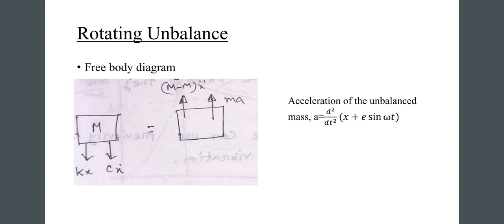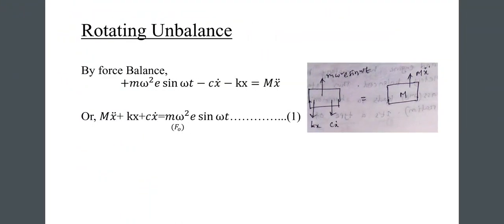From the free body diagram with m·k·x and c·x-dot terms, the acceleration of the unbalanced mass is a equals d²/dt²·(x plus e·sin(omega·t)). The equation of motion becomes: m·x-double-dot plus k·x plus c·x-dot equals m·omega-squared·e·sin(omega·t), where m·omega-squared·e corresponds to the effective force f-naught.